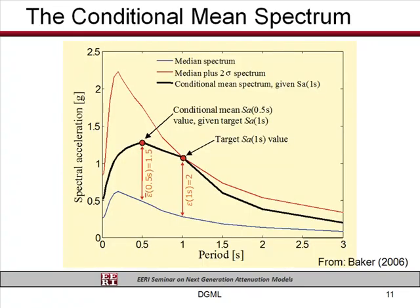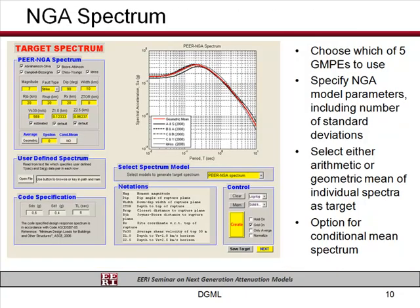You would just specify a conditional mean spectrum, input the epsilon value and the period, and it will calculate a conditional mean spectrum from the NGA relationships. So those are the three ways you can construct your target spectrum.